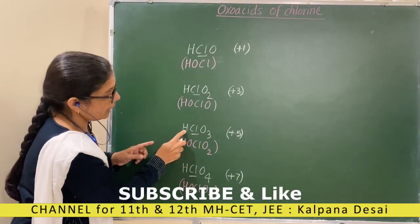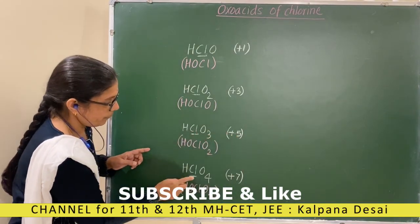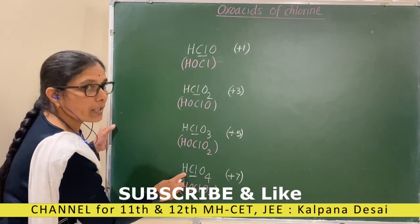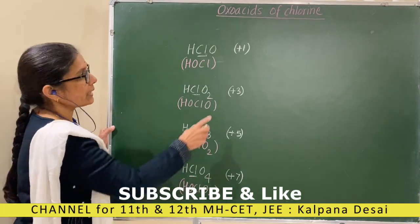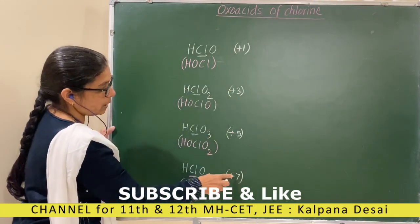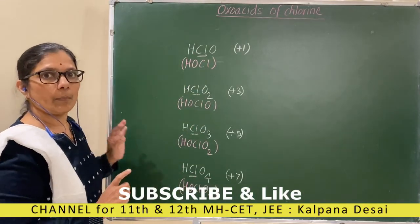Minus 6 plus 1, therefore minus 5, so it is plus 5. Minus 8 plus 1, minus 7, therefore this is plus 7. These are the oxidation numbers of chlorine in these compounds.